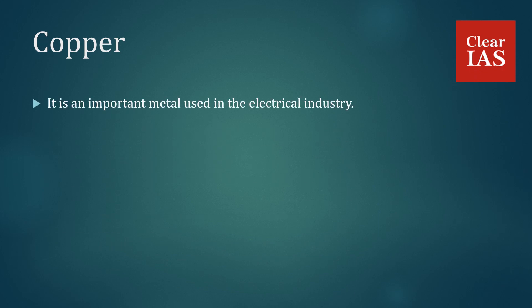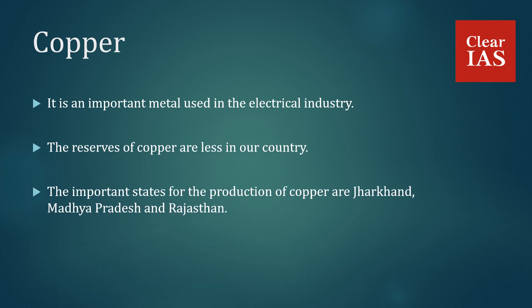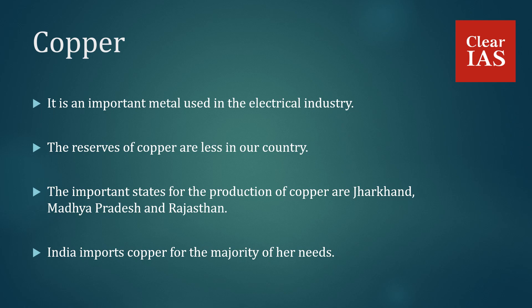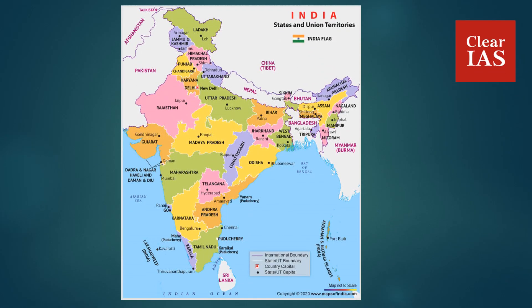Copper is an important metal used in the electrical industry. The reserves of copper are less in our country. The important states for the production of copper are Jharkhand, Madhya Pradesh and Rajasthan. India imports copper for the majority of her needs. The important mines are located in Singhbhum and Hazaribagh of Jharkhand, and Khetri in Rajasthan.